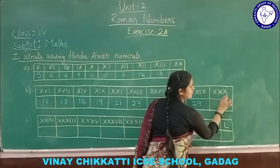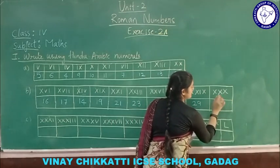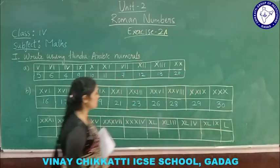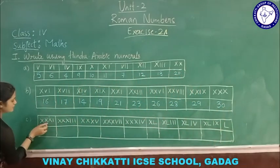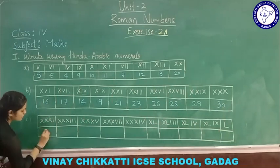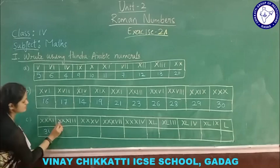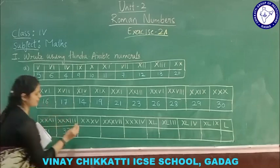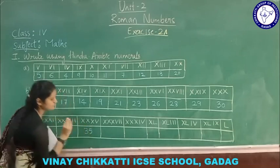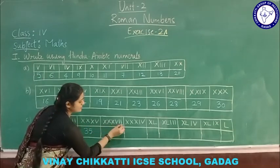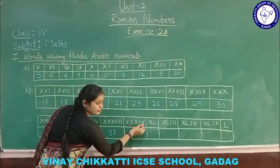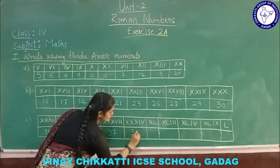X X X means the same number gets added: 10 plus 10 plus 10 equals 30. X X X I is 31. X X X I I I is 33. X X X V is 35. X X X V I I is 37. X X X I V is 34.